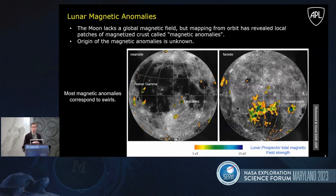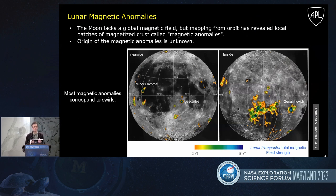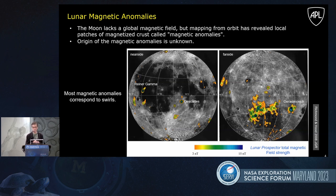Reiner Gamma is also a magnetic anomaly. The moon doesn't have a global magnetic field, but there are regional to local patches of magnetized crustal rocks — magnetic anomalies. The origin of the magnetic anomalies is not known, although there are a number of hypotheses. And making things even more interesting, most magnetic anomalies correspond to the swirl albedo features.